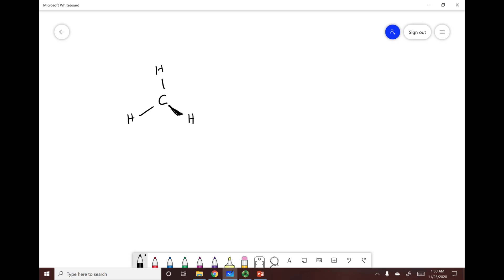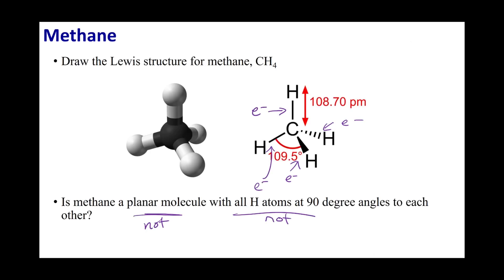This hydrogen right here is coming out towards us. The hydrogen going backwards into the page is represented by a dashed wedge. This is how we represent something in three dimensions on paper, a blackboard, or a screen. The angle in a tetrahedral is not 90 degrees — the hydrogen-carbon-hydrogen angle found in methane is 109.5 degrees. Because the molecule is symmetrical, this is the angle of every hydrogen-carbon-hydrogen bond.